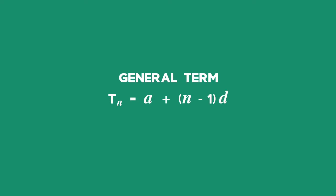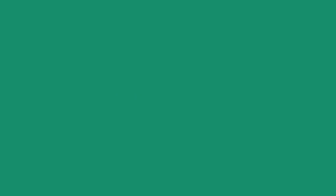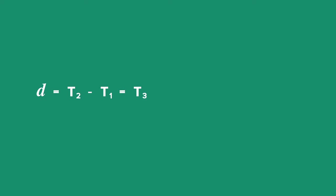This can be generalized to TN is equal to A plus the result of N minus 1 multiplied by D, where N is the number describing the position of the term, which is always a natural number. To test if a sequence is arithmetic, we need to show that there is a common or constant difference between successive terms. To find the constant difference D, we calculate term 2 minus term 1, or term 3 minus term 2, or in general, T(N+1) minus TN.